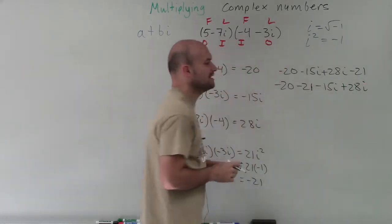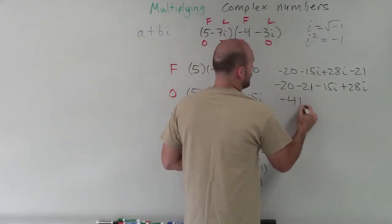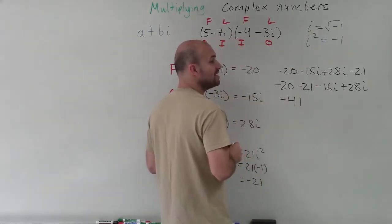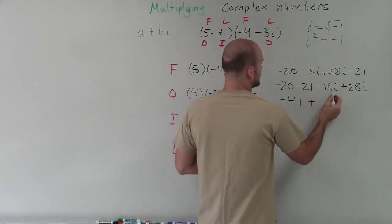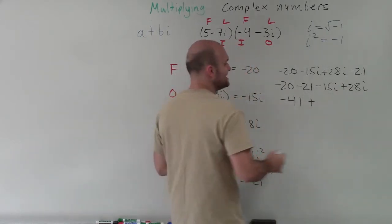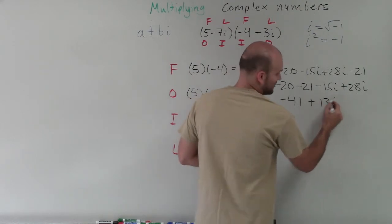Well, negative 20 minus 21 is negative 41. And negative 15i plus 28i is positive 13i.